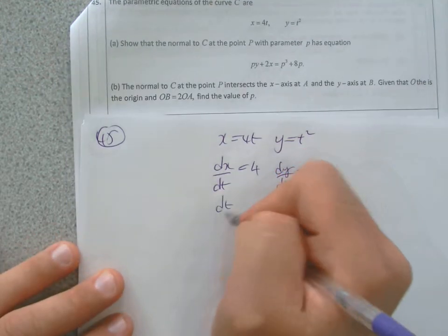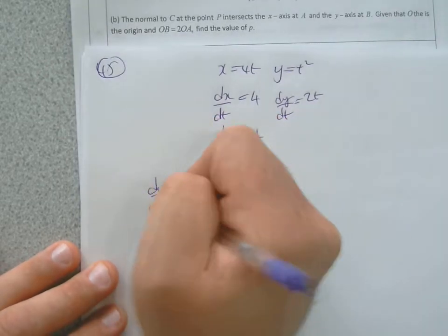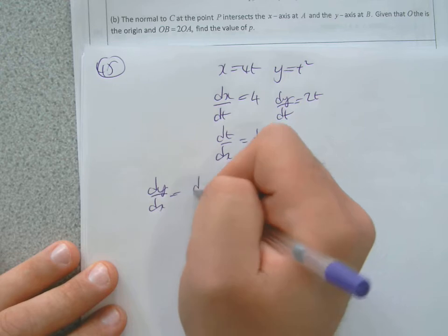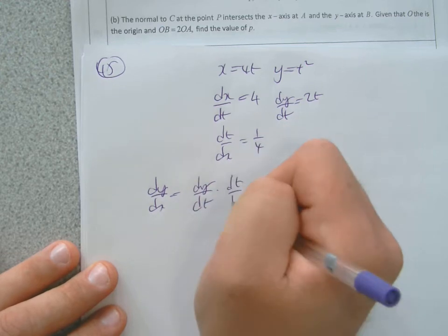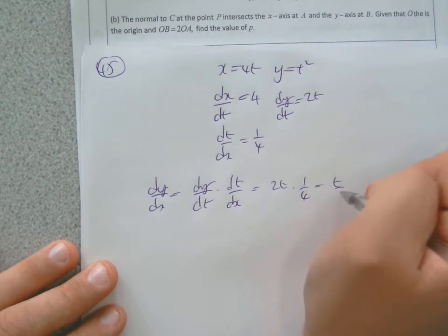So then dt/dx is going to be 1 over 4. Then dy/dx is dy/dt times dt/dx, which is 2t times a quarter, which is t over 2.